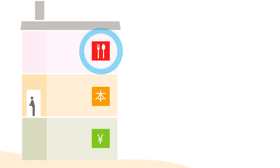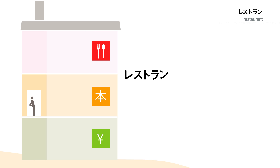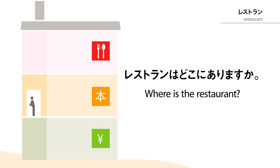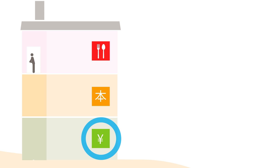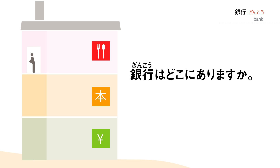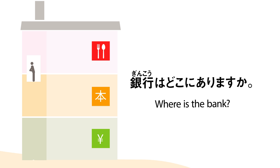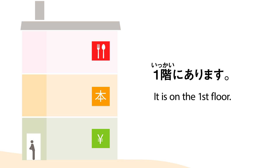にかいにあります — it's on the second floor. Let's try another one. Where is the restaurant? レストランはどこにありますか? — Where is the restaurant? 三階にあります — it's on the third floor. Let's try one more. Where is the bank? 銀行はどこにありますか? — Where is the bank? 一階にあります — it is on the first floor.